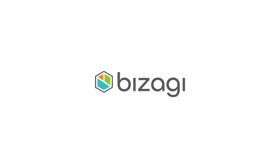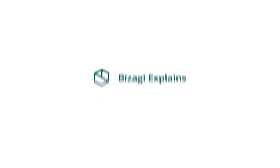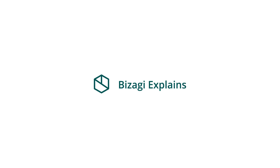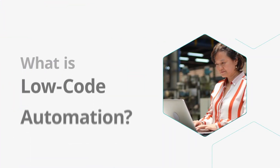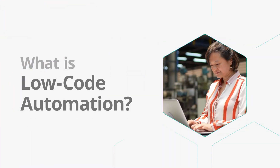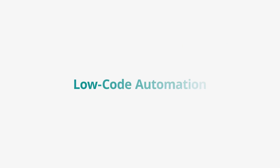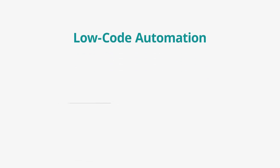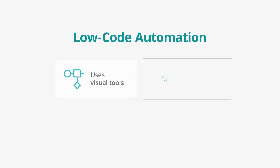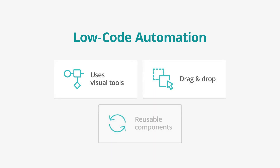Welcome to another episode of Visagi Explains. Today, we're answering the question: what is low-code automation? Low-code automation allows users to automate business processes with very little coding. Instead, it uses visual tools with drag-and-drop features and reusable components.